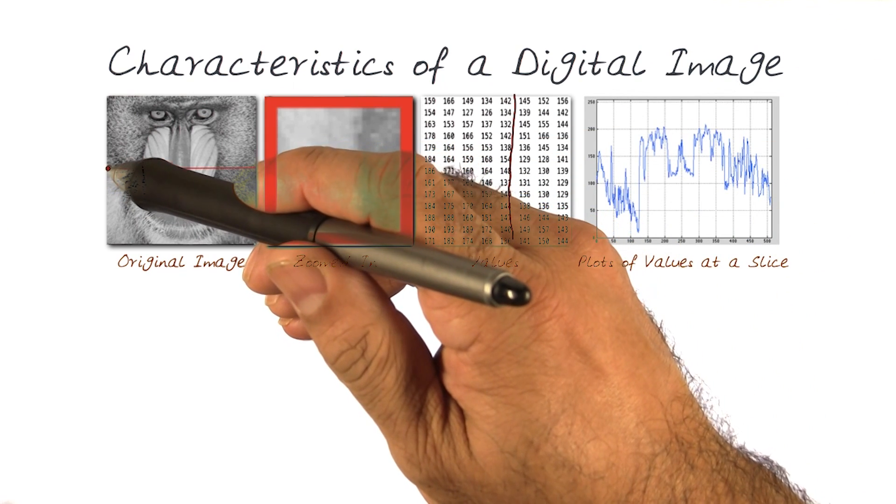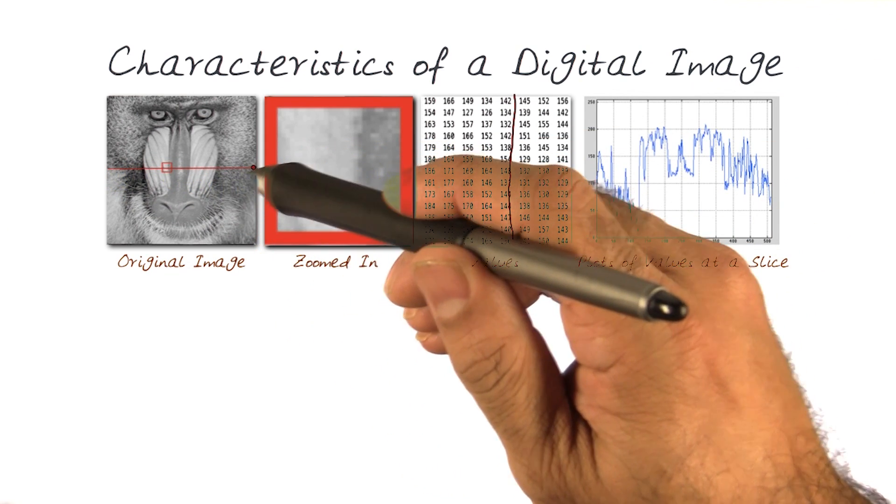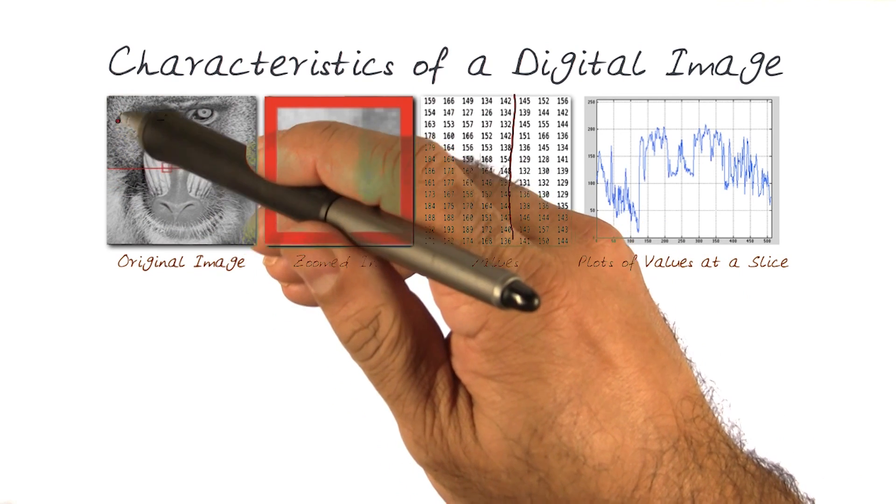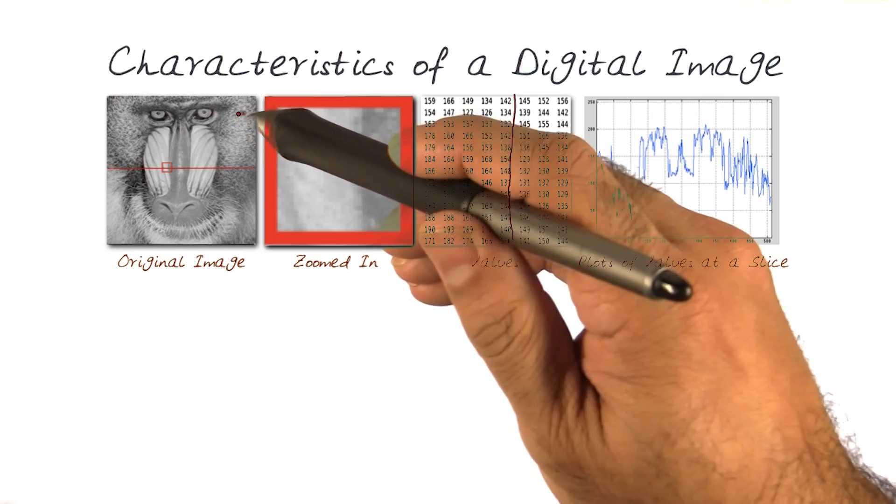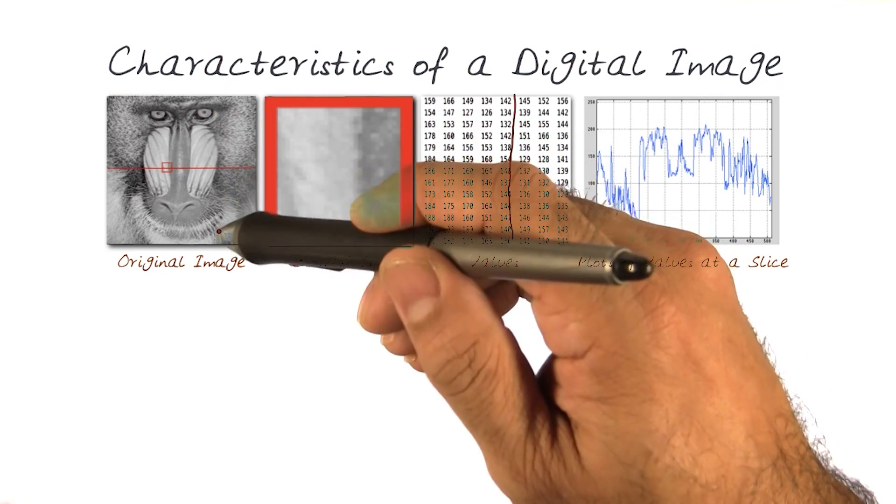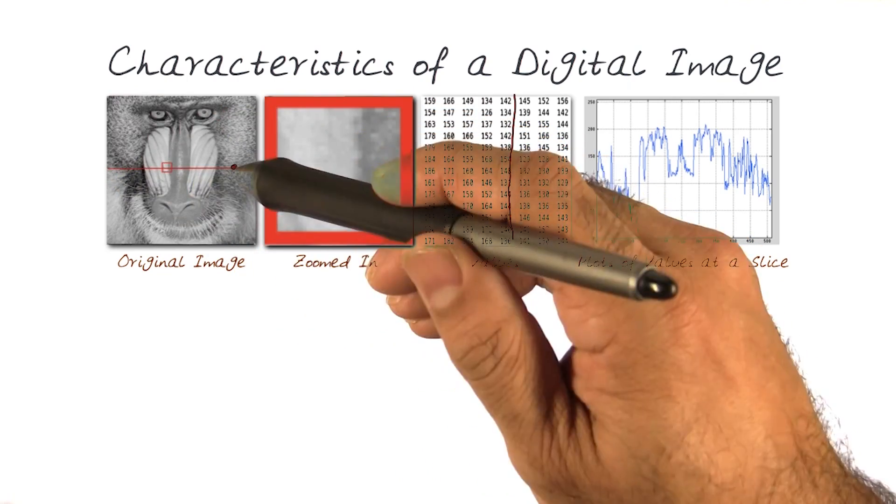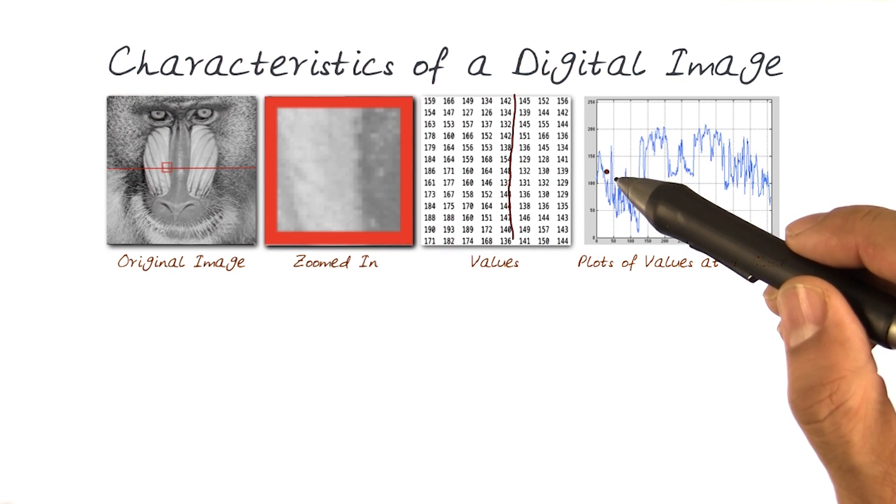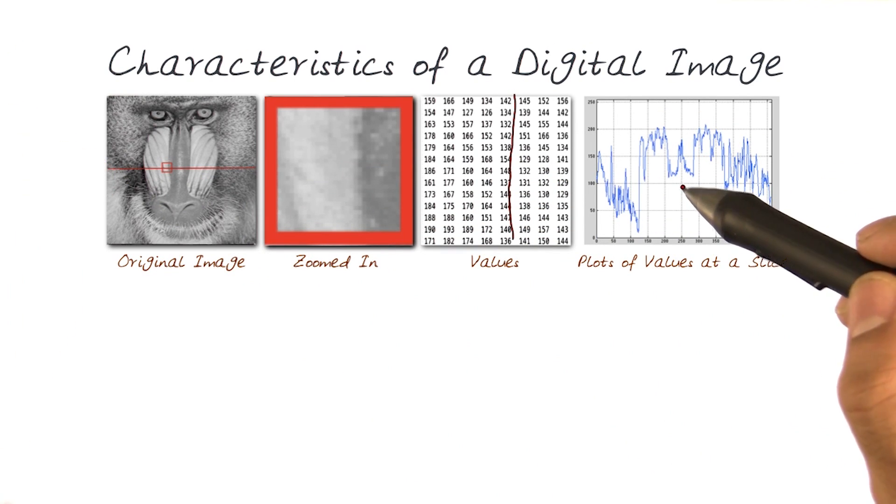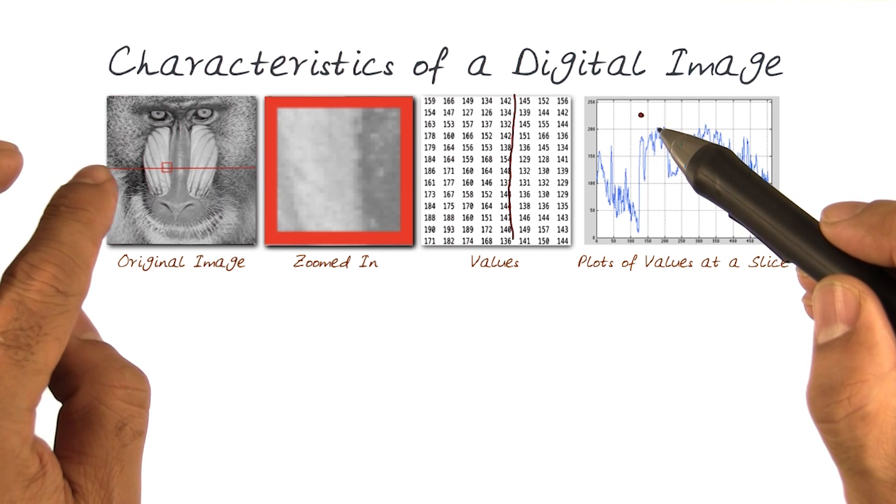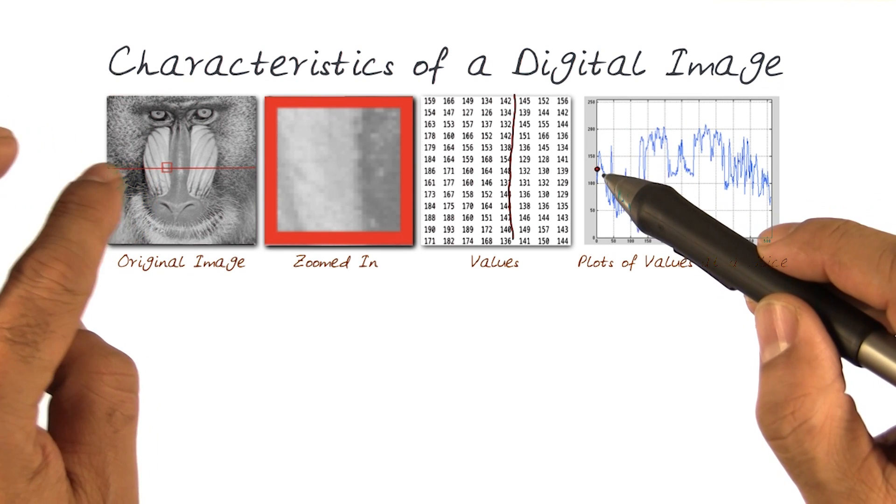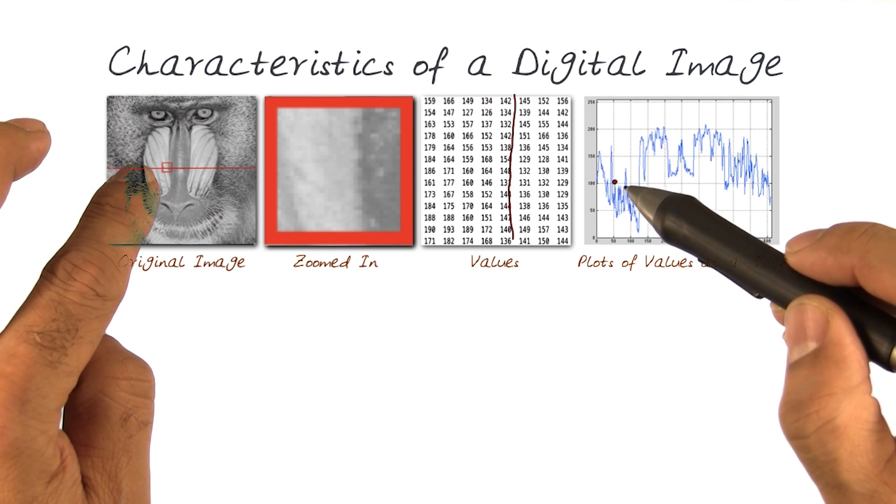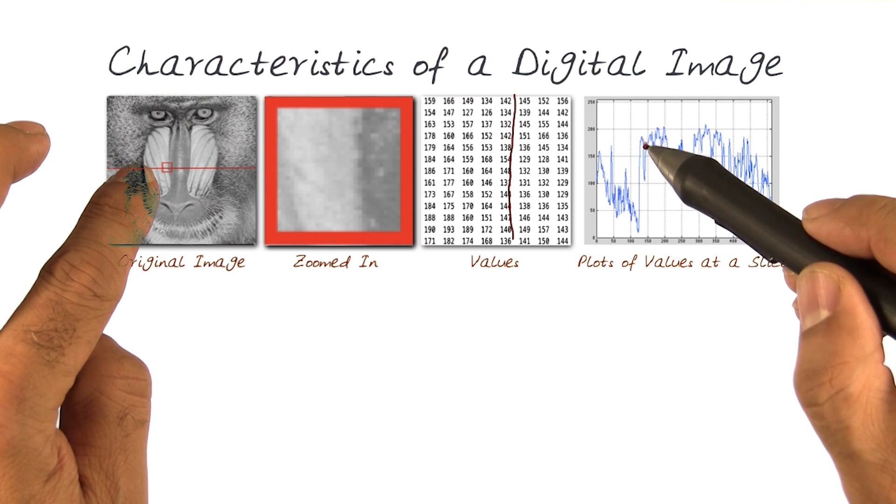Here what I've done is I've actually now drawn a line. Basically remembering these are different columns and in this way are different rows, I found one row and I've actually drawn a plot of the values at that slice. If you now traverse it, starting from this way, you notice there are lots of darker values with a lot of change going on. All of a sudden when you come up here, there's a lot more higher values.